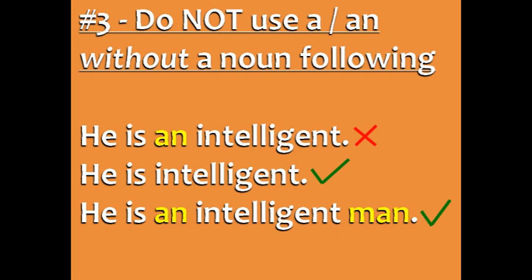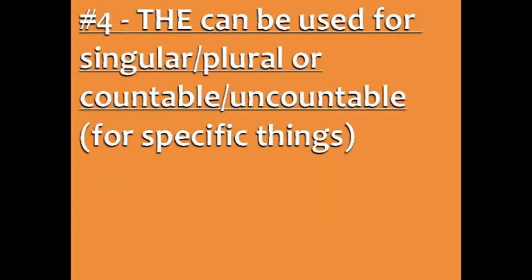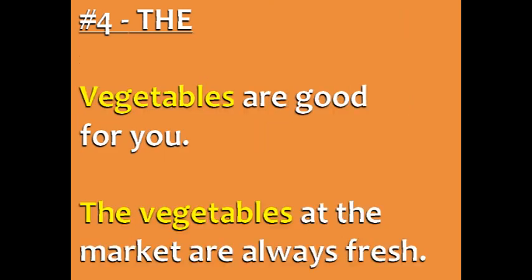Here's another example. The word 'the' can be used for singular or plural, and countable or uncountable, for specific things — not for general things. For example, 'Vegetables are good for you' refers to vegetables in general, so we don't use 'the.' But if you say 'The vegetables at the market are always fresh,' we are talking about specific vegetables — the ones at the market — so we use 'the' before 'vegetables.'